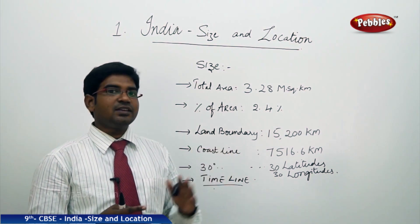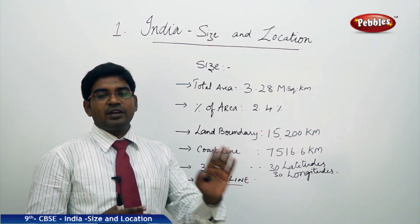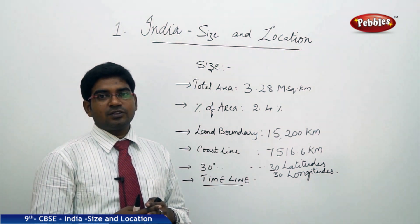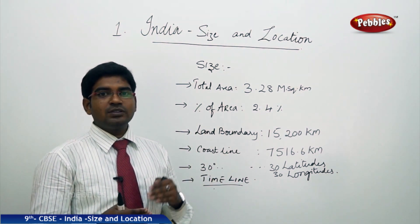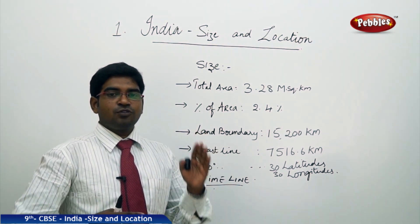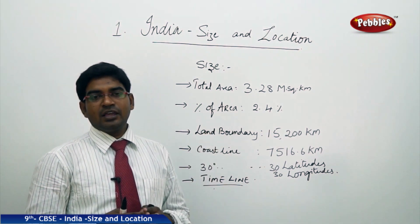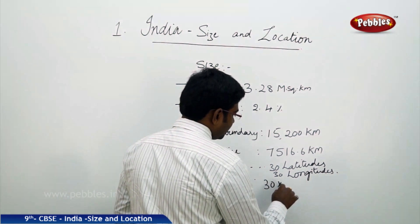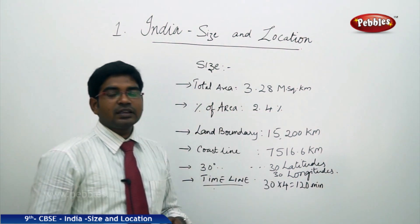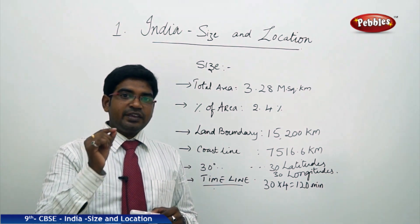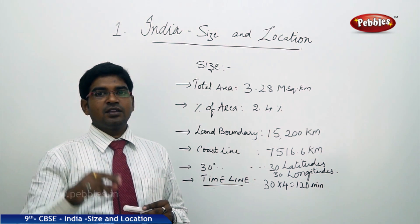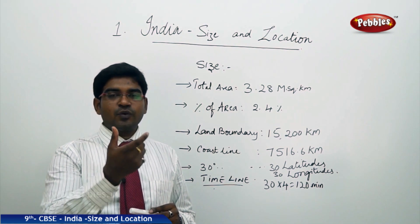India's longitudinal extent runs from 68 degrees near Gujarat to 97 degrees near Arunachal Pradesh, giving nearly 30 longitudes passing through India. Each longitude takes 4 minutes to pass, so 30 multiplied by 4 equals 120 minutes. This means a 120-minute time difference can be observed across India. If 68 degrees were taken as the base for Indian Standard Time, people in Arunachal Pradesh would experience a 2-hour delay.